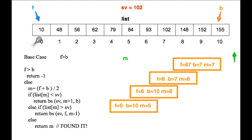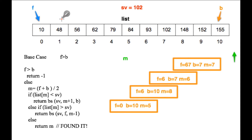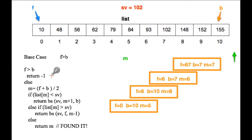This is a recursive algorithm. Our base case is: if f becomes greater than b — and we're talking about index values here — so if f became equal to 5 and b became equal to 4, then f would be greater than b, and that would mean the value we're searching for is not in the list. In that case we return -1.